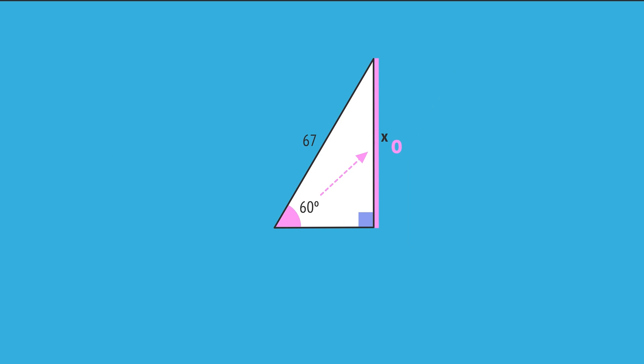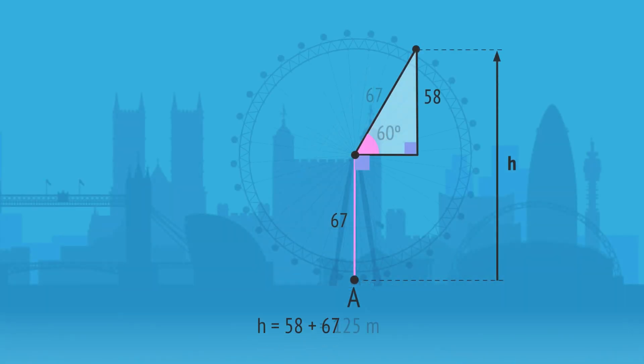The sides involved in this problem are the opposite side and the hypotenuse, so we use the sine ratio. Substituting the values gives sine 60 equals X divided by 67. Multiplying both sides by 67 to get X on its own and entering this into a calculator gives X equals 58 metres. And when we add the 67 metres, we get a capsule height of 125 metres.